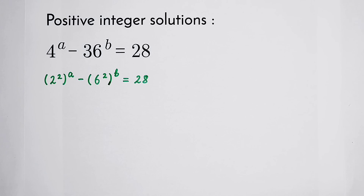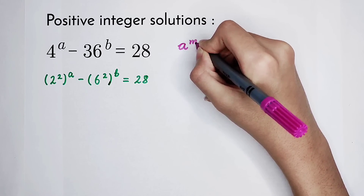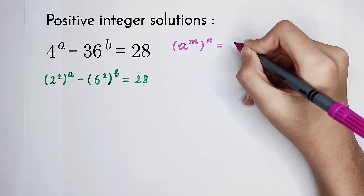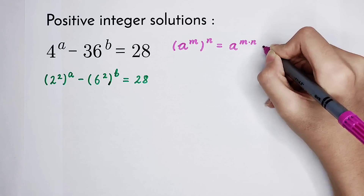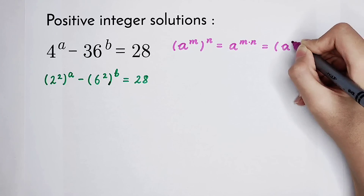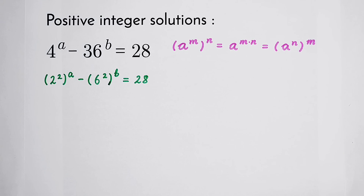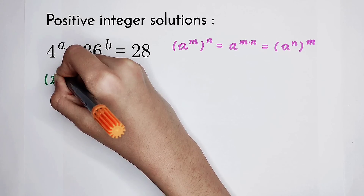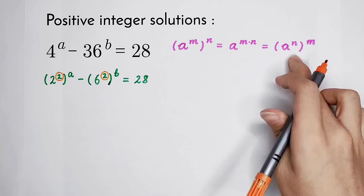Now I have to get the formula. A to the power of m, all to the power of n, is equal to a to the power of m times n. It is also equal to a to the power of n, all to the power of m. In this equation, because a 2 appears in both places, we use this formula.